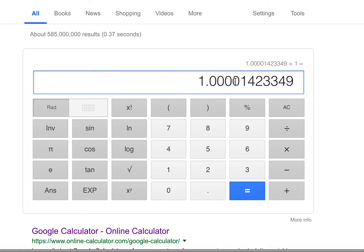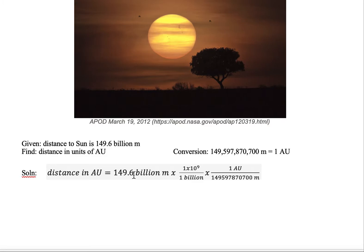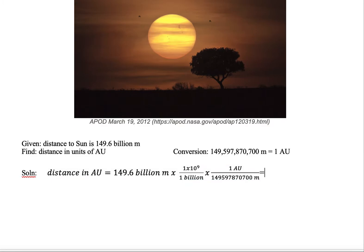I get an answer of 1.00001423349. Now let's round this. I notice that I have 149.6, so I've got four significant digits, and so we can keep the first four digits. My answer is 1.0000 AU. Billion cancels with billion, meters cancel with meters, and I'm left with a unitless number multiplied by AU, giving an answer of 1.0000.